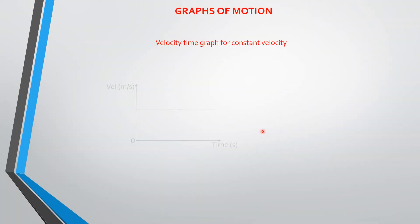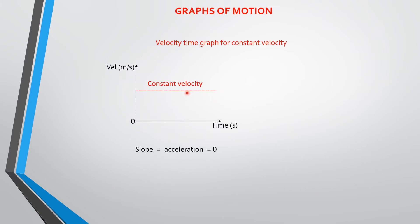This is the velocity-time graph for constant velocity. When your velocity is constant, the body is not accelerating, so your acceleration equals zero. You should be able to differentiate each of the graphs. Draw all these graphs in your notebook, label them accordingly, and note that the slope of this graph is zero because velocity is constant and acceleration is not taking place.